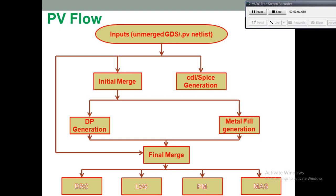Silicon foundries generate a mask as per the layout pattern provided by the physical design engineer. They transfer the mask pattern to the silicon wafer surface and, according to that, process the silicon wafer to create a physical pattern for each layer of the IC.